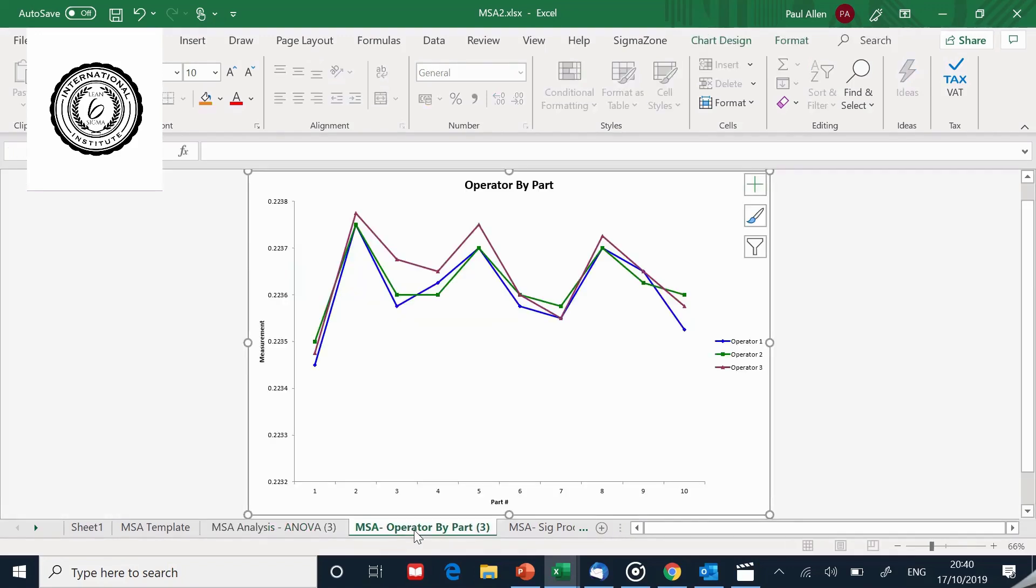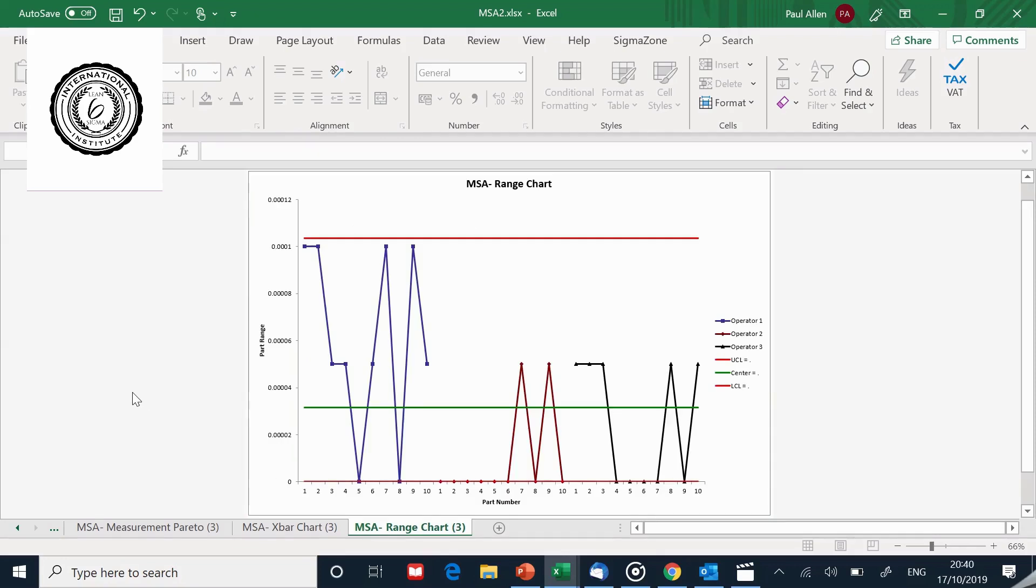Now if we look at the graphs, let's take a look at the operator by part graph. You can see that everybody's measuring the parts, they're getting bigger together, they're getting smaller together, so that's okay. Then if we go to the range graph at the end, this is the difference between the first and second measurement. You can see that operator one, whilst he's not bad, he's definitely worse than the other two operators.